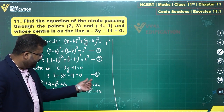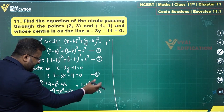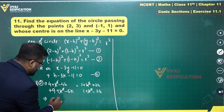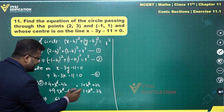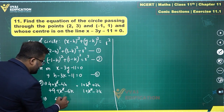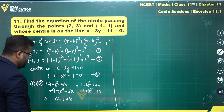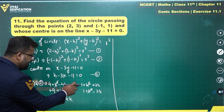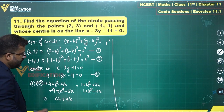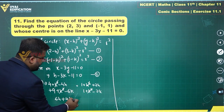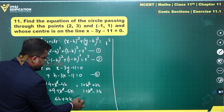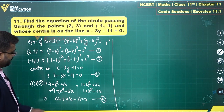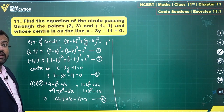Bringing h and k terms to one side: negative 4h minus 2h gives 6h, and negative 6k plus 2k gives 4k. The constant terms: 9 plus 4 is 13 on the left and 1 plus 1 is 2 on the right, so 2 minus 13 gives minus 11. This gives us 6h plus 4k minus 11 equals 0, which is equation number 4.